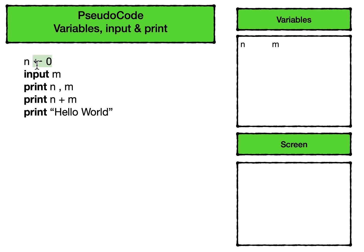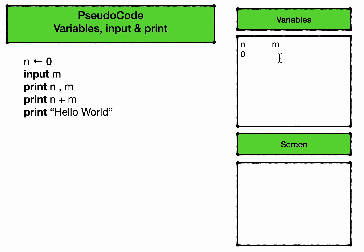The first line here is a statement which says n arrow zero. What that means is the value zero is being assigned or given or put into a variable called n. So over here I've got n, and after this first line n will have the value of zero. The next line says input m. Input means sit and wait for the user to type something in. In this case we're going to store whatever is typed in into the variable m. Let's assume that somebody typed in the value three.